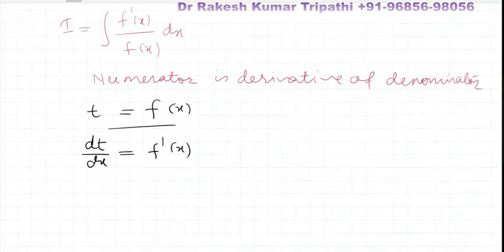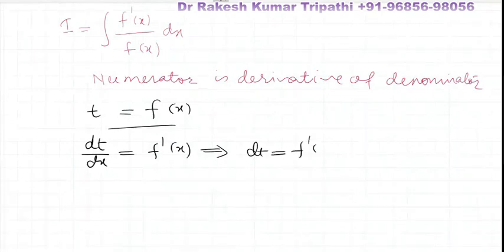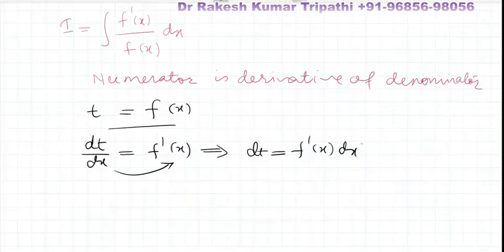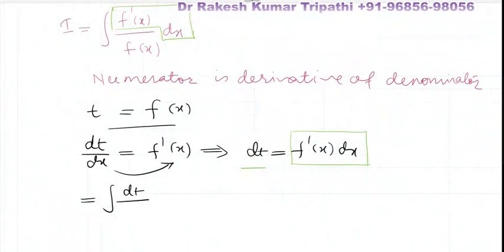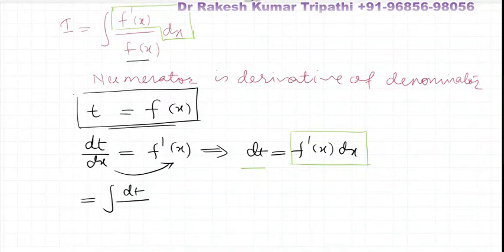The derivative of the right side will be f dash x, which implies dt is equal to f dash x dx, on transferring dx to the right-hand side. Now you can see that f dash x dx can be replaced by dt. So instead of f dash x dx, we shall write dt. And in the denominator, we have f of x, so f of x will be replaced by t.